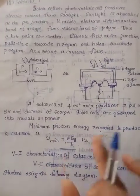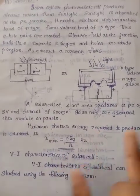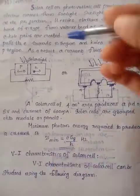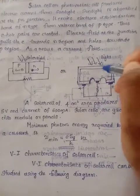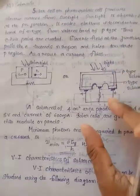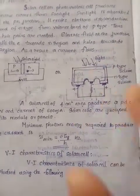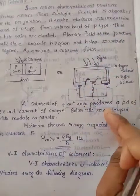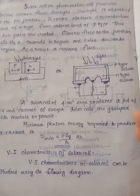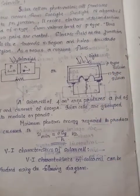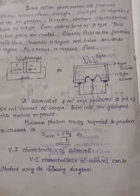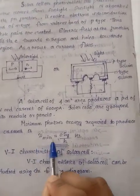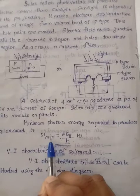This is the minimum photon energy required to produce current. This is the minimum photon energy — this light can produce current. That is the minimum frequency, mu minimum. That is the frequency minimum equation.